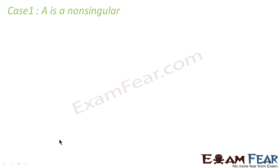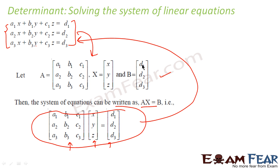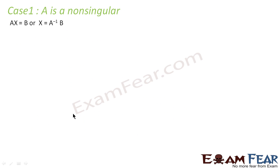Once we have the matrix form AX = B, we consider two cases. Case one: matrix A is non-singular. Case two: matrix A is singular. If A is non-singular, that means the determinant of A is non-zero.